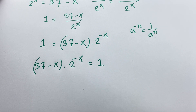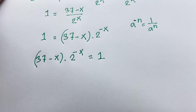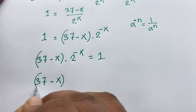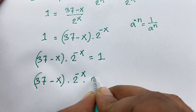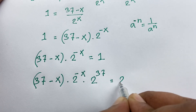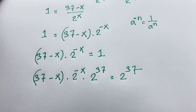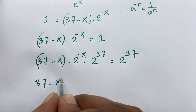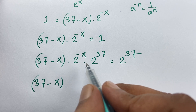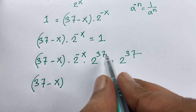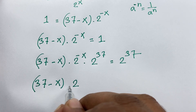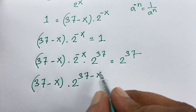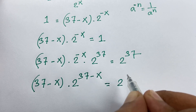Now I multiply both sides by 2 to the power 37. So we get: 37 minus x times 2 to the power minus x times 2 to the power 37 is equal to 2 to the power 37. Using the exponential law, the exponents add, giving 37 minus x times 2 to the power 37 minus x is equal to 2 to the power 37.